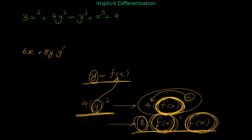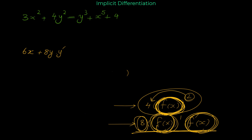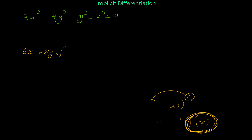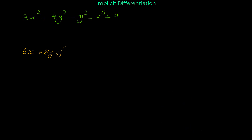Times y prime, since f′(x) is y prime. So exactly this expression — that's the reason why when you take the derivative of a term involving y, you multiply by y prime, always in implicit differentiation. Now let's take the derivative of the other side with respect to x. The derivative of y³, from the power rule, is 3y², but don't forget to multiply by y prime. The derivative of x⁵ is 5x⁴, and the derivative of the constant 4 is 0.